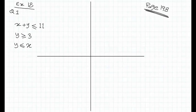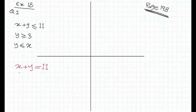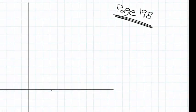Question one on page 198. The first inequality is X plus Y is less than or equal to 11. When drawing in the XY axis, we draw the equation instead — X plus Y is equal to 11. Since X and Y are on the left side and 11 is on the right, we can say X equals 11 and Y equals 11. Plot 11 on the X axis and 11 on the Y axis, and joining these two points gives us the graph of X plus Y equals 11.